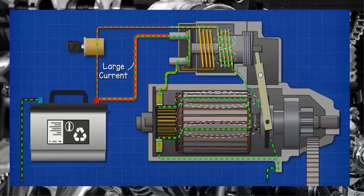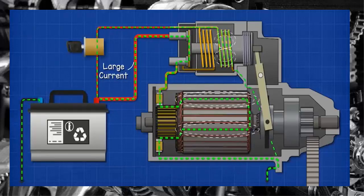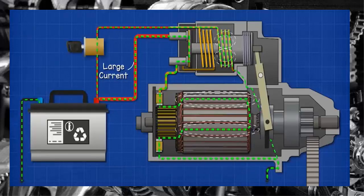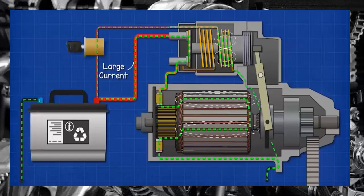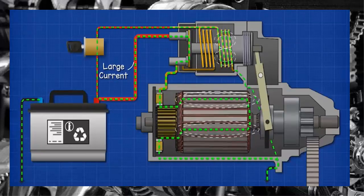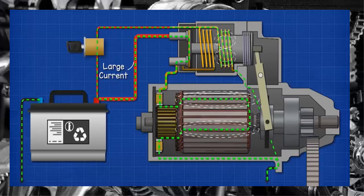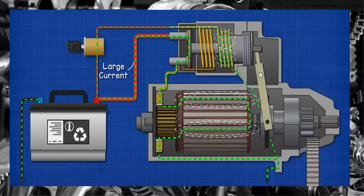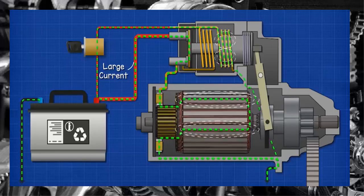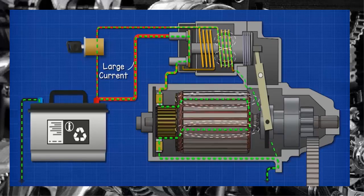Then back to another commutator plate and through another brush, which is grounded to the frame of the car, so the current returns to the battery. The coil produces an electromagnetic field which interacts with the permanent magnet or field winding in the stator. This interaction causes the rotor or armature to rotate very fast and with a high torque.